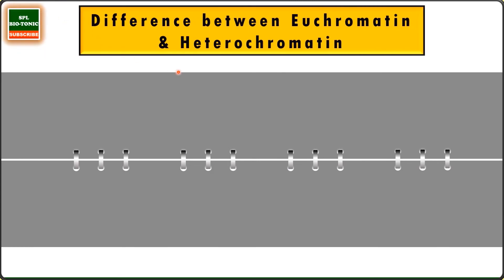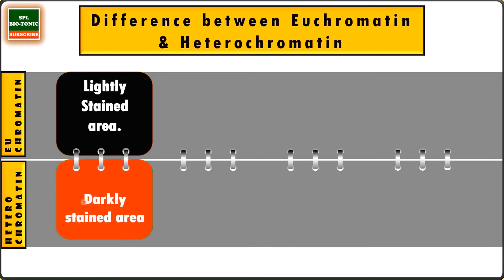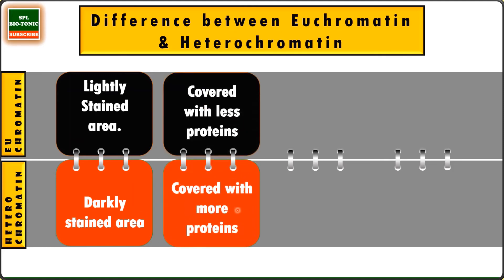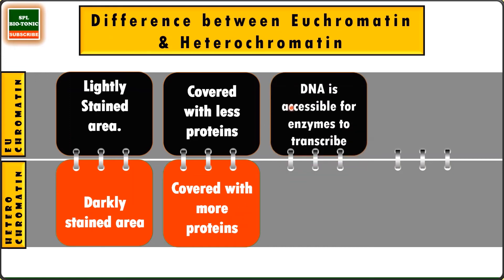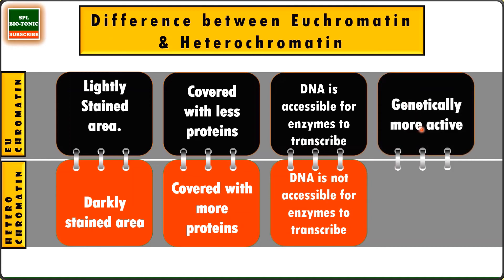Euchromatin are lightly stained areas in the chromosome, whereas heterochromatin are darkly stained areas. Euchromatin are covered with fewer proteins, making the DNA accessible to enzymes such as RNA polymerase to form RNA — a process called transcription. So in euchromatin, DNA is accessible for transcription. Heterochromatin are covered with more proteins, so the DNA is not accessible for enzymes to transcribe. Therefore, euchromatin is genetically more active compared to heterochromatin.